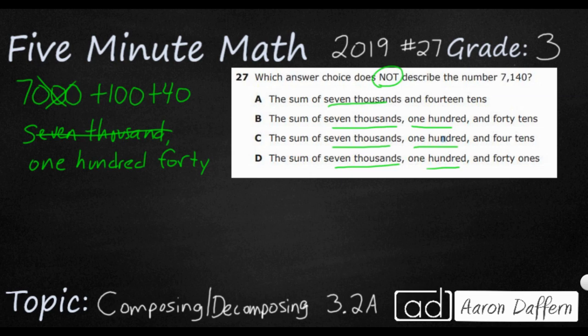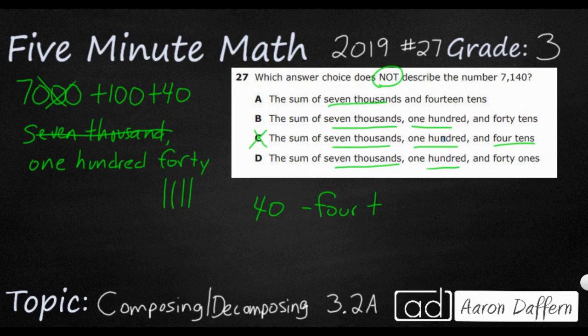40, in pictorial form, is going to be 4 ten-rods — so 4 tens. Counting by tens: 10, 20, 30, 40. Answer choice C says 4 tens, which is closest to our word form, so we can mark C off as one that does correctly describe 7,140.